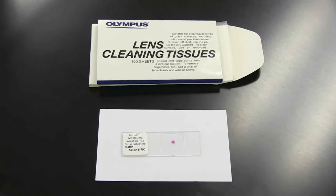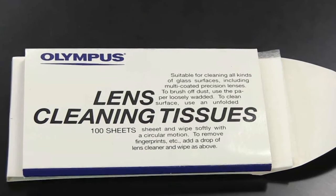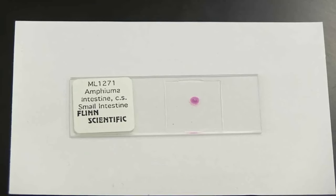When using the microscope, you will also need lens tissue. In this video, we will use the microscope to examine a slide that contains a cross section of the intestine of a rat.